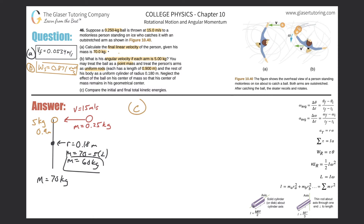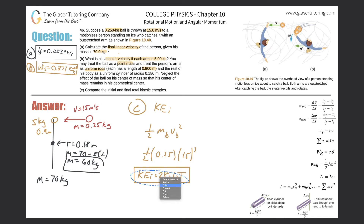Part C: compare the initial and final total kinetic energies. The initial kinetic energy is supplied only by the ball moving linearly: KE_initial equals one half times mass of ball times velocity squared. That's 0.5 × 0.25 × 15², which gives approximately 28.1 joules.